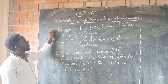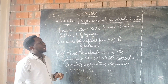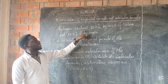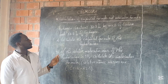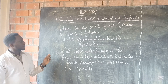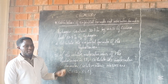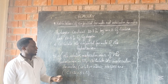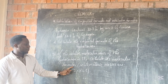Here we have a problem that we have to solve by calculating the empirical formula and the molecular formula. The question states that a hydrocarbon contains 82.8% by mass of carbon and 17.2% of hydrogen. We have to calculate the empirical formula of the hydrocarbon. For question B, if the relative molecular mass of the hydrocarbon is 58, calculate the molecular formula.